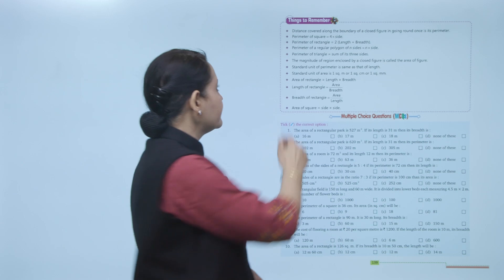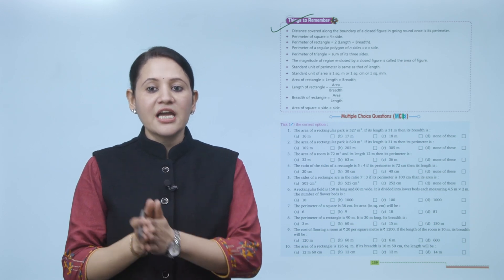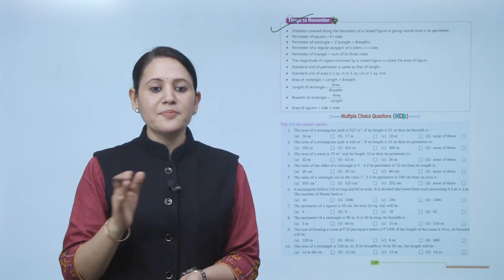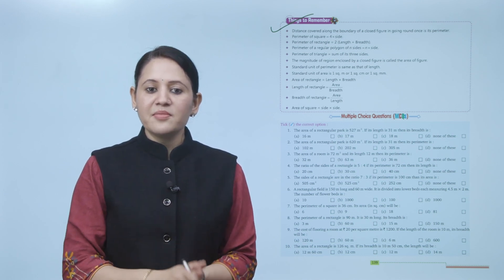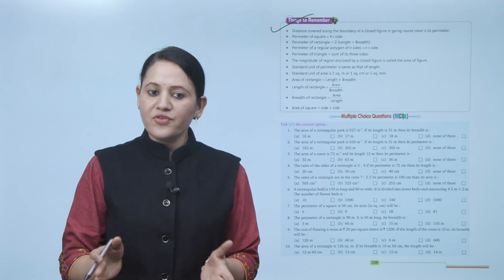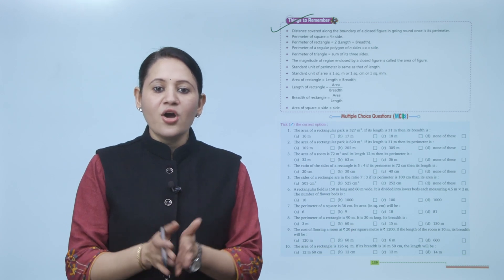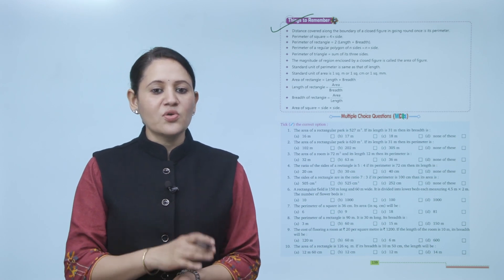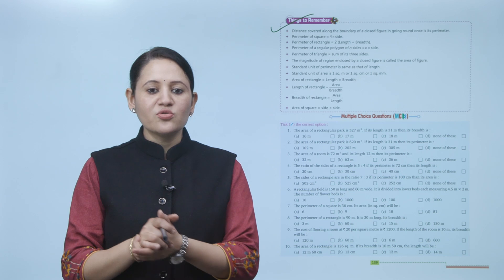Next, things to remember: The distance covered along the boundary of a closed figure going around once is its perimeter. Perimeter of a square equals 4 times side. Perimeter of a rectangle equals 2 times (length plus breadth). Perimeter of a regular polygon of n sides equals n times side. Perimeter of a triangle equals the sum of its three sides. The magnitude of the region enclosed by a closed figure is called its area. Standard unit of area is square meter, square centimeter, or square millimeter. Area of rectangle equals length times breadth; area of square equals side times side.